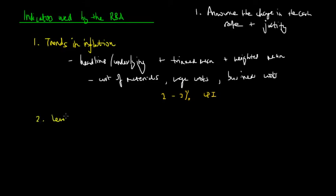The second indicator is the levels of national spending and production. So what they look at is how much we're spending, and they're going to look at that through aggregate demand, and how much we're producing, which is done through GDP figures.